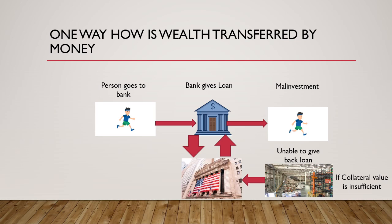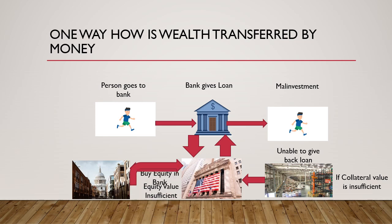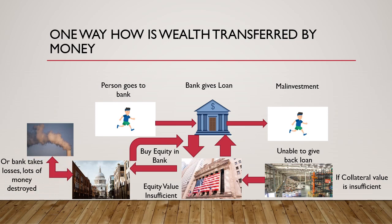In a third scenario, even the equity value of the bank is insufficient to recover the loans. Then the government steps in, infusing equity into the bank by buying some of its loans using taxpayer money — transferring wealth from taxpayers. Alternatively, if the bank writes off the loans, depositors lose their money. In all these cases, there is a general wealth destruction where everyone loses.